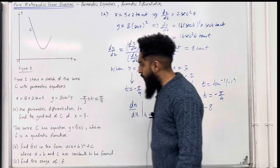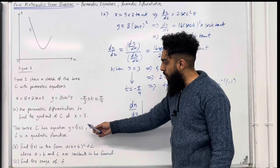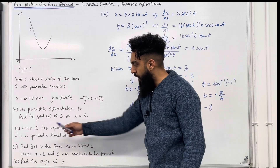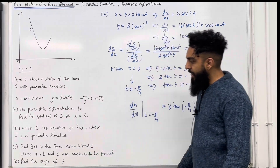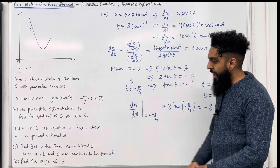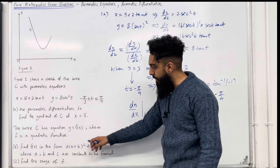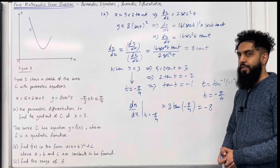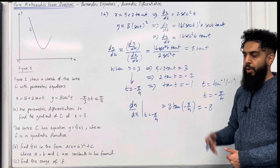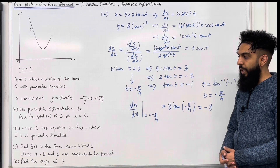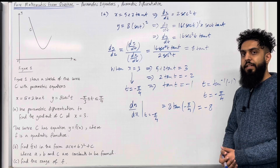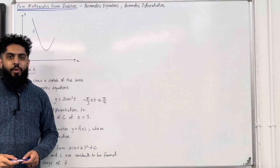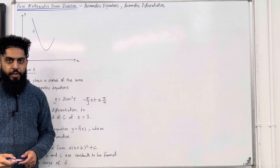The curve C has equation y equal f of x, where f is a quadratic function. Part B: find f of x in the form a(x plus b) squared plus c, where a, b and c are constants to be found. Please pause the video and have a go at part B. Once you've got your complete solution, then play the video. Let's have a look at the solution to part B.